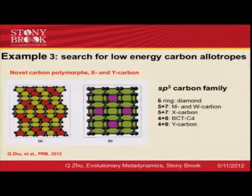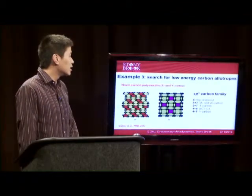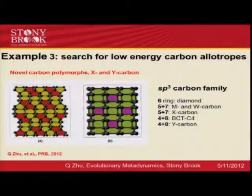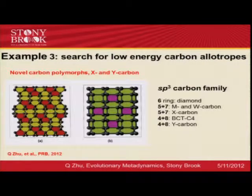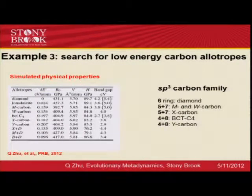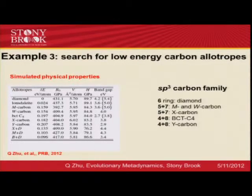We categorized these carbon allotropes into five types. The first type is diamond, containing six-membered rings. The second type is M-carbon and W-carbon, containing five-plus-seven membered ring topology. The third type is X-carbon, another variant of five-plus-seven ring topology. The fourth and fifth types are BCT4 and Y-carbon, two different types of four-plus-eight membered ring topology. All of these structures are calculated to have excellent hardness and optical properties and are energetically competitive, meaning that if synthesized, they could have many practical uses.